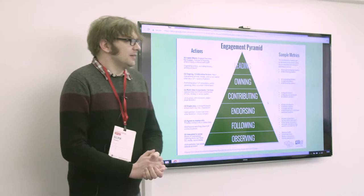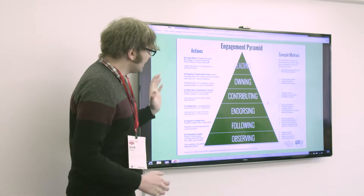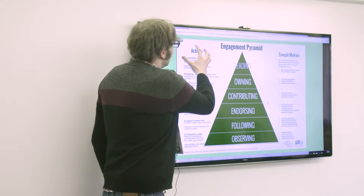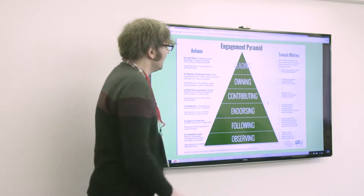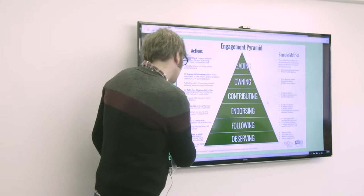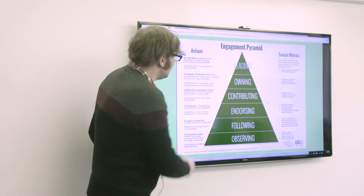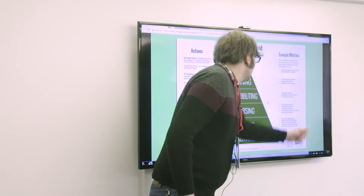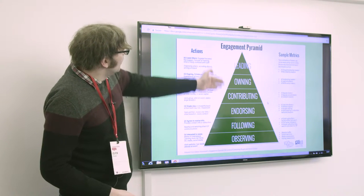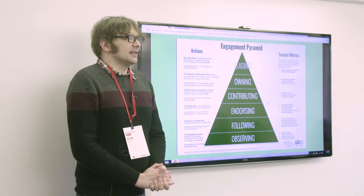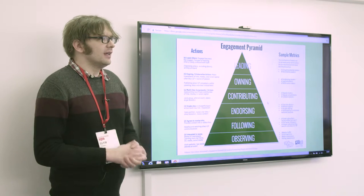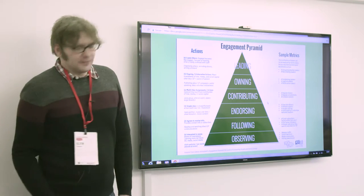Another example — I'm sure everyone's seen some kind of engagement pyramid or ladder of engagement. Again, this is from Mobilisation Lab, and it's a particularly good example because of the way they consider some of the different actions that people might do, as well as the metrics for measuring that. For example, someone in the 'following' section might be reading and watching Greenpeace communications, and you might measure that by people who are active email subscribers. But again, it doesn't do the full job of taking it all the way to how you can translate that into actually helping move people up that ladder of engagement.